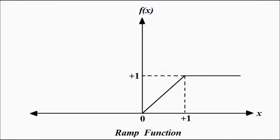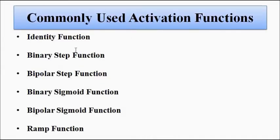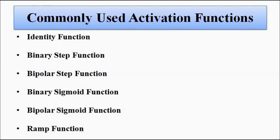We have discussed all the activation functions and the shape of their waveforms. These are the commonly used activation functions. There are many other functions used, and if we come across any other activation functions I will discuss them, but mostly you will find these types in neural networks. I hope you liked this video. Please subscribe to the Engineering Tutorial channel for more videos related to electrical, electronics, instrumentation, and communication engineering. Thank you very much.